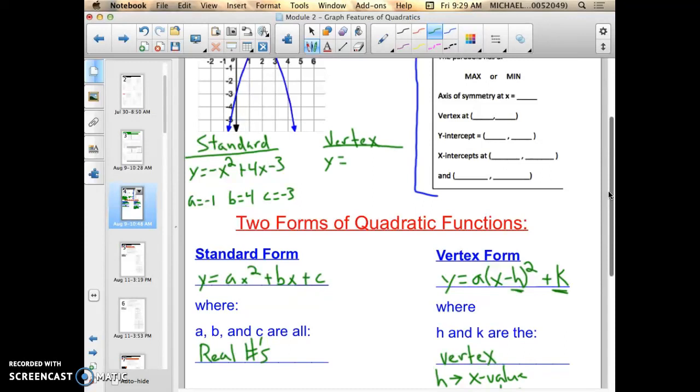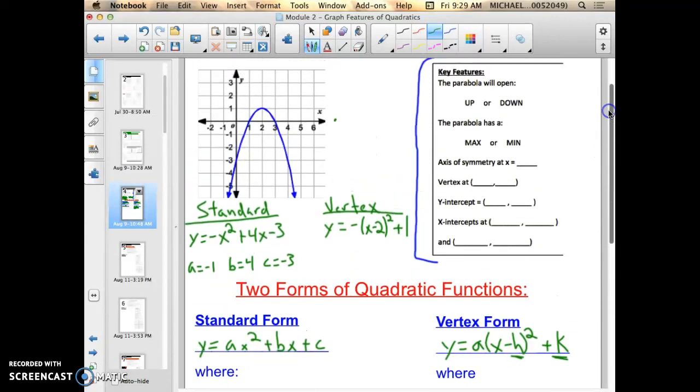is y equals negative, and it's negative because it's opening downward, x minus 2 squared plus 1. If you notice, we're going to talk a little bit more in depth in a different video of the vertex, but this vertex, the h value is 2, and the k value is 1.